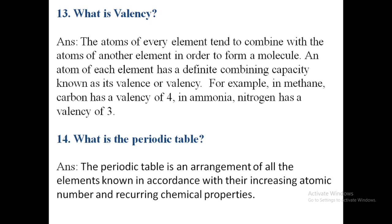The fourteenth question: what is the periodic table? The periodic table is an arrangement of all the known elements in accordance with their increasing atomic number and recurring chemical properties. You can also add details about who invented the periodic table, what are groups, and what are periods.